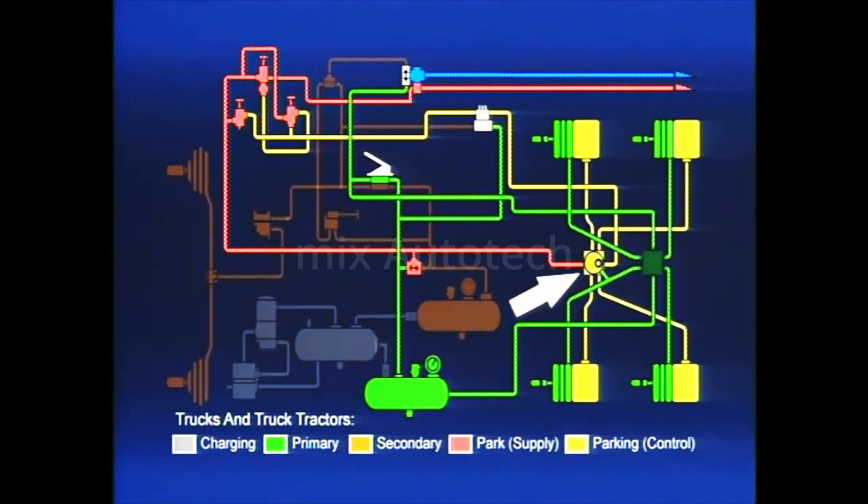The relay valve speeds the application and release of the spring brakes. A spring brake relay valve delivers or releases air to the spring brakes in response to control air received from the PP1 push-pull valve or other source. A different relay valve controls the service brakes.